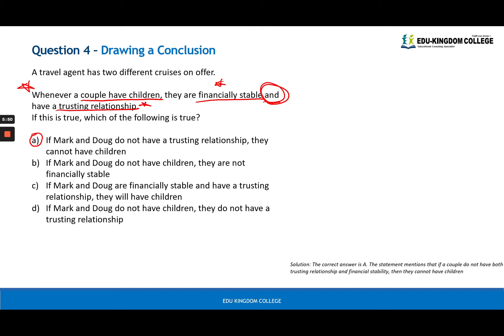That means B, C and D are all incorrect. Let's look at B. If Mark and Doug do not have children, they are not financially stable. So this is not definitely true. If Mark and Doug do not have children, there might be other reasons. They might not be financially stable or they might not have a trusting relationship or it might be both. This is possible. Therefore, we can't definitively say that B is correct. And so on for C and D.